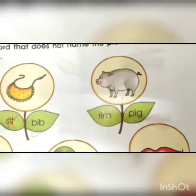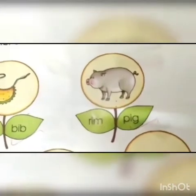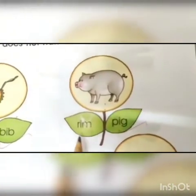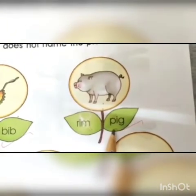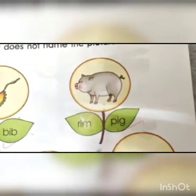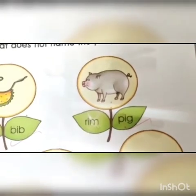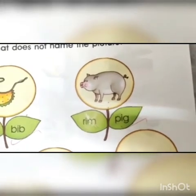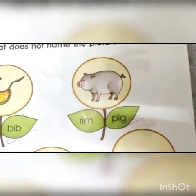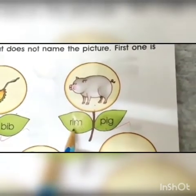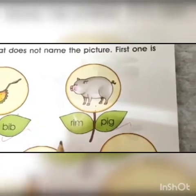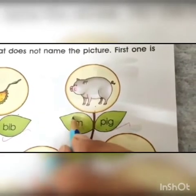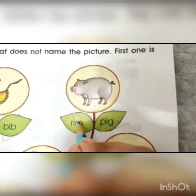Now read the words given in the leaves: rim, pig. Which word does not belong to the picture? Rim. Now you will close the word rim.